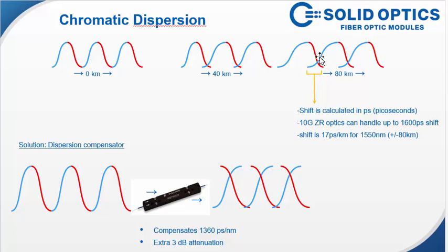Which causes a little shift of the signal which can cause CRC errors and other errors. The shift is calculated in picoseconds as you can see here. The 10 GB ZR optics can handle up to 1600 picoseconds.